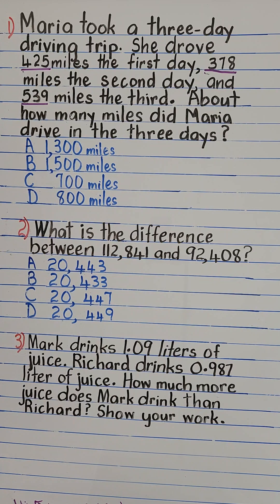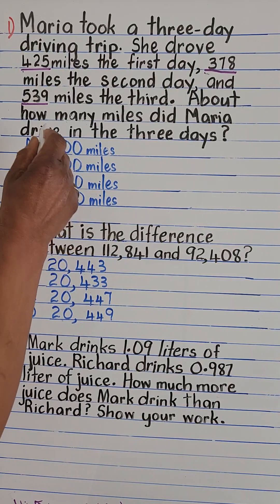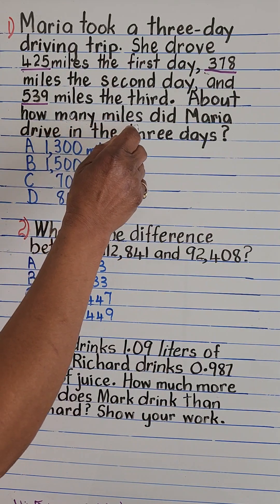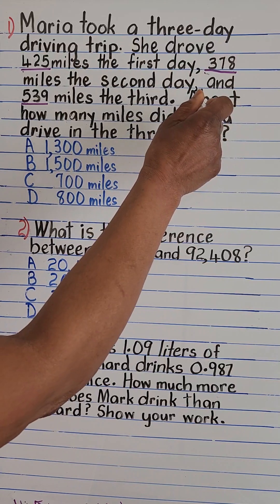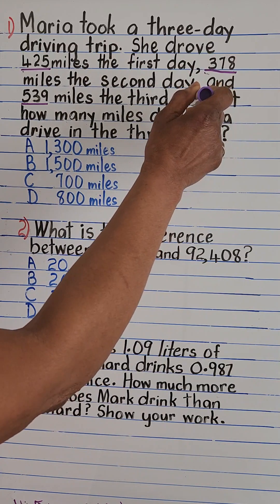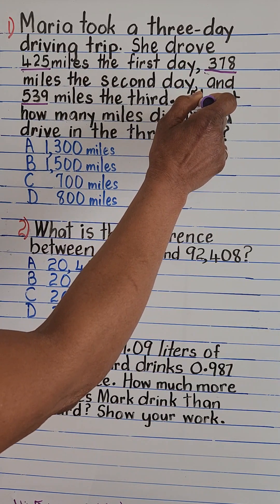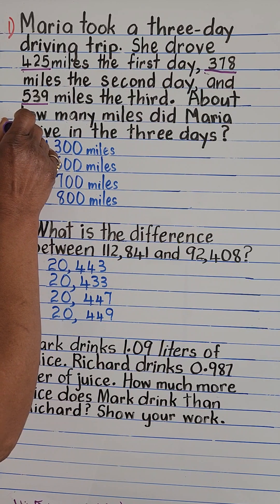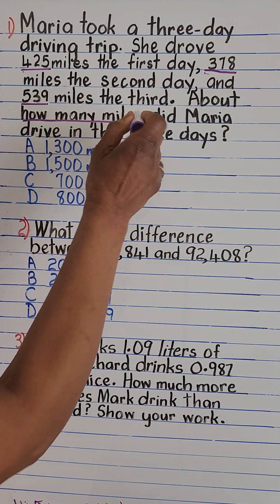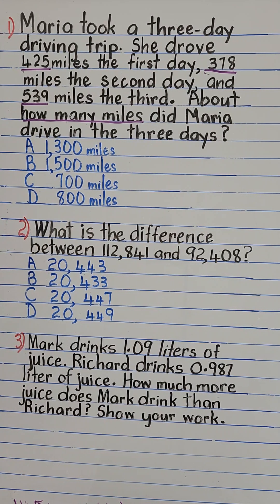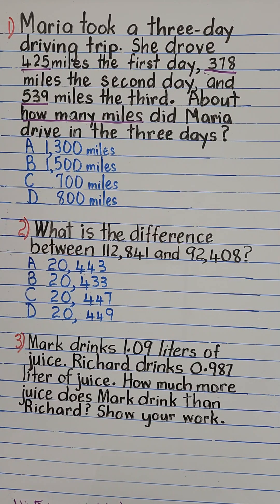We need 378 miles, we need 425, and we need 539. What are we going to do with those numbers? We ask ourselves: what is the problem asking us to do? It's asking 'how many miles.' We're also going to look at the word 'about.' 'How many miles' will tell us what operation to perform — it means we are going to add these numbers.